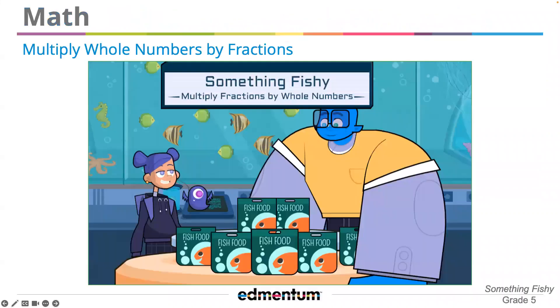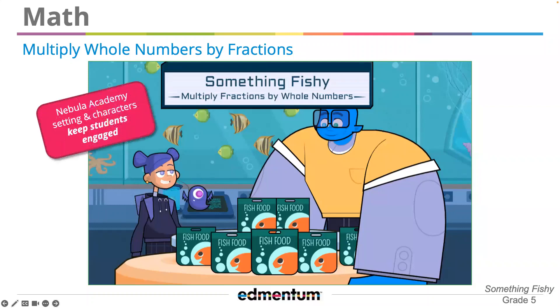Research confirms that students understand more when they are presented with a variety of models and representations, progressing from concrete to pictorial to abstract. Something Fishy, a grade 5 module released in July, is a great example of using this approach to demonstrate how to multiply whole numbers by fractions. As a bonus, it uses the Nebula Academy setting and characters to keep students engaged.